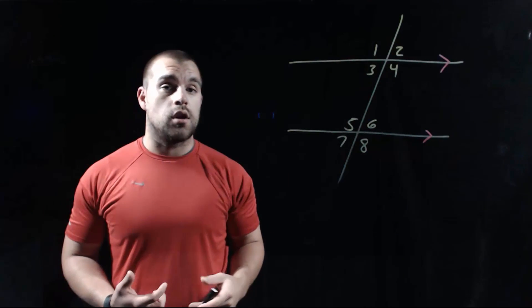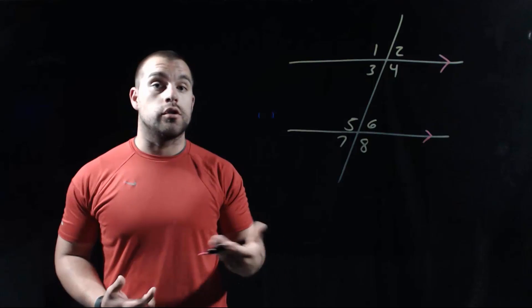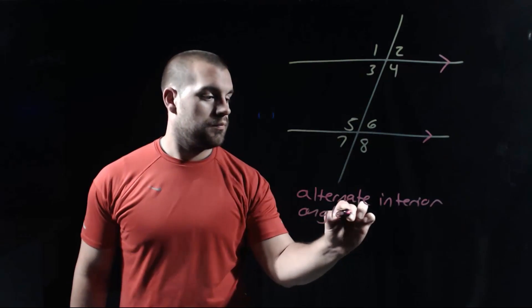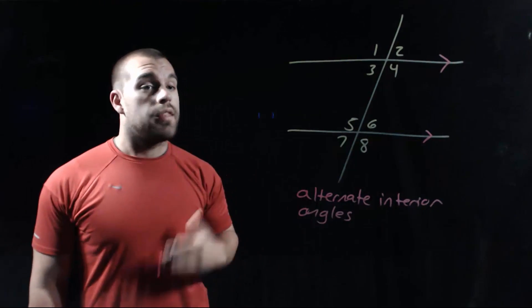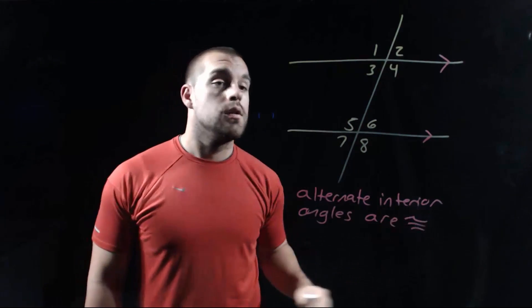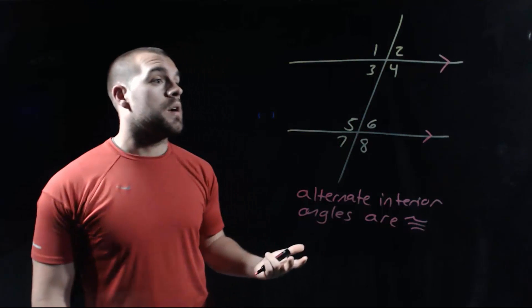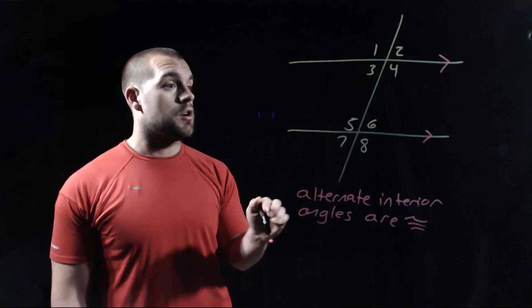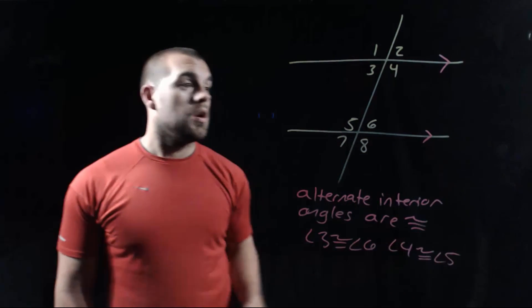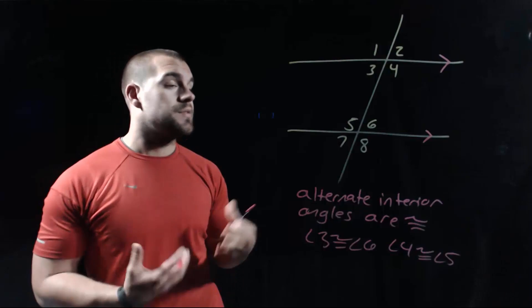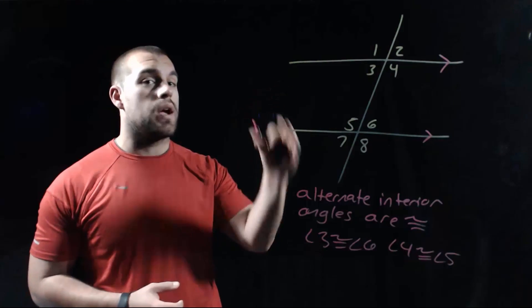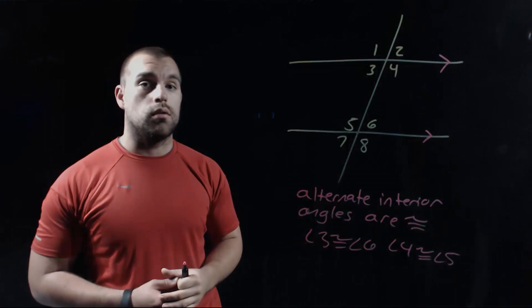Our next pair of angles that we talked about were alternate interior angles, and their relationship is that these are also congruent. So we've got two pairs of alternate interior angles in our picture. We've got angles 3 and 6 — those are going to be congruent — and we've also got angles 4 and 5, and those angles are also congruent.